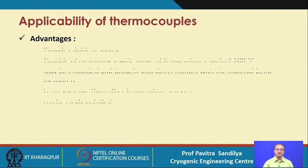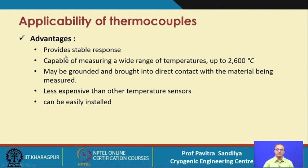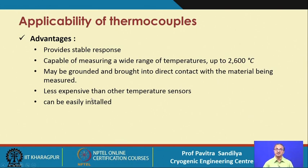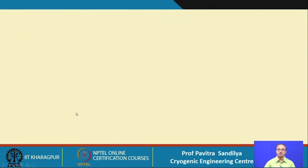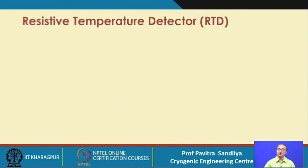Advantages of thermocouples: they provide stable response, can measure a wide range of temperatures, may be grounded and brought into contact with the material being measured, and are less expensive and easily installed. Disadvantages: measuring two temperatures simultaneously is less effective and can generate errors, but overall thermocouples are very commonly used in research.